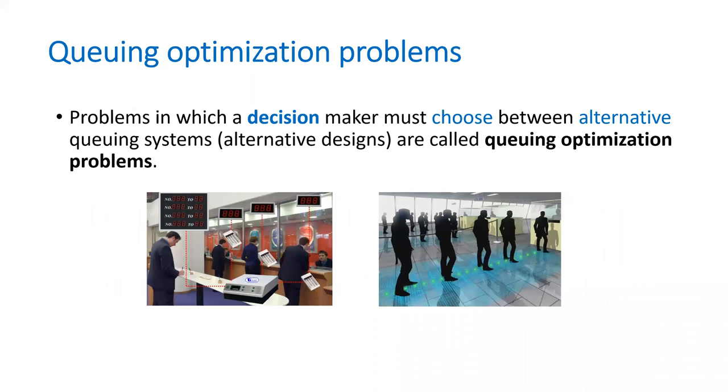The next topic is queuing optimization. Whenever we talk about optimization, we have a number of alternatives and we are trying to choose the best one, something that optimizes our objective function. Our objective function is usually minimizing the number of people waiting in line or minimizing wait time.